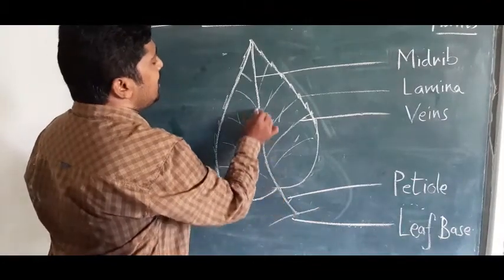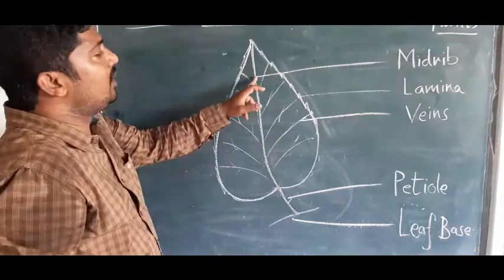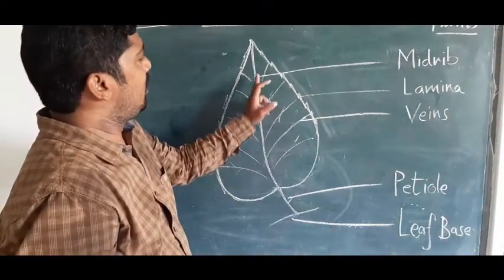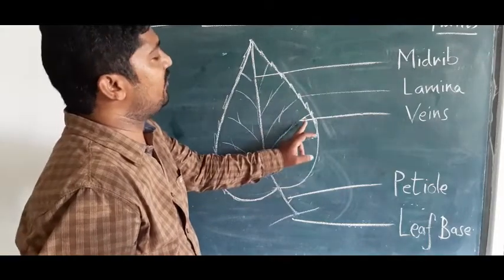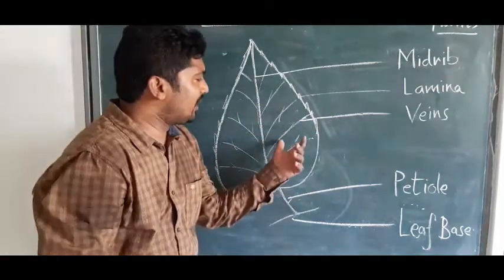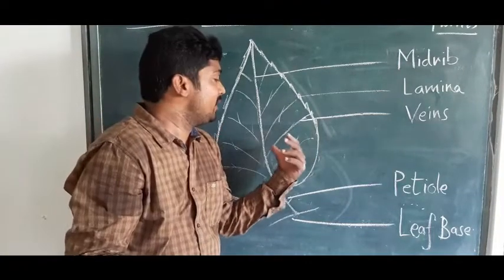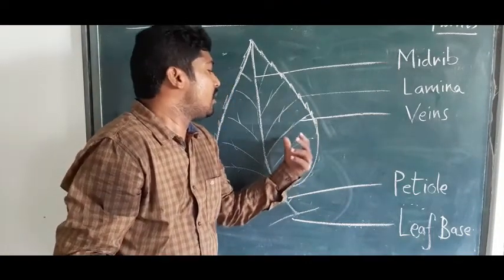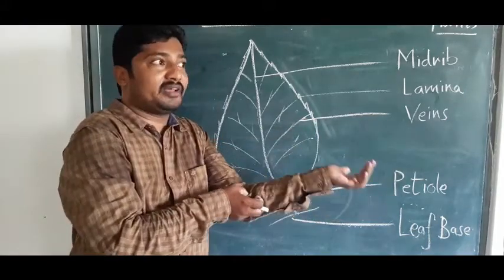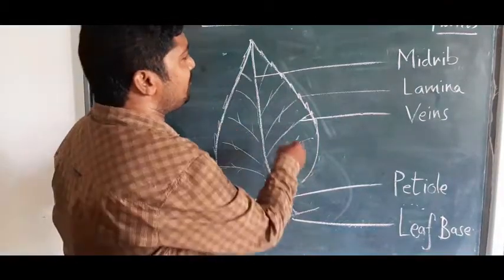The midrib runs through the center of the leaf. Next are the veins, which spread out from the midrib like a frame and supply water, minerals, and everything through them. We also have veins in our body. Next is the lamina, which is the broad flat part of the leaf.